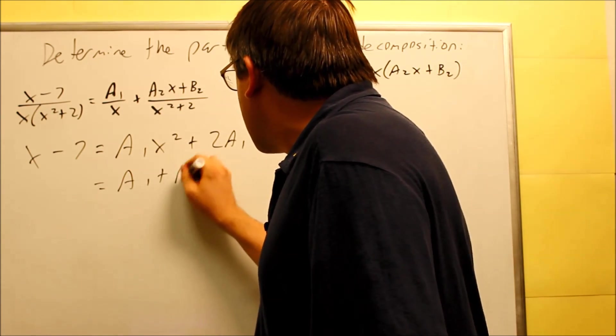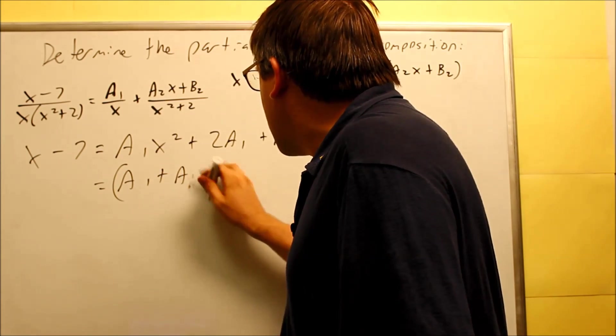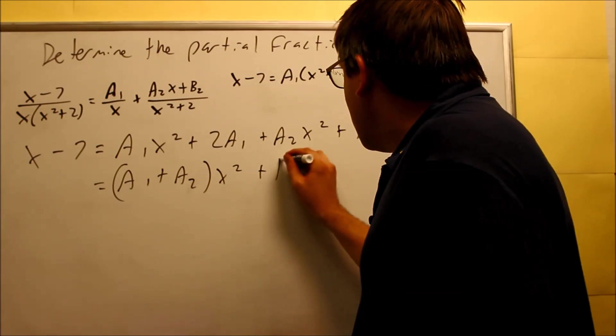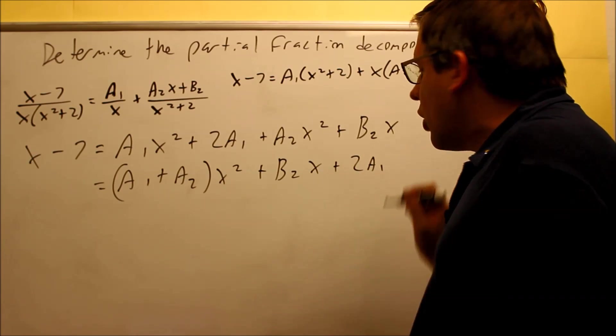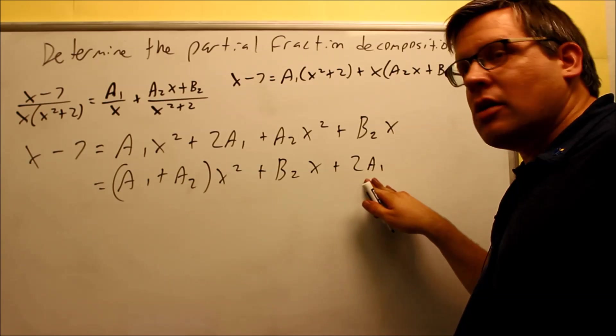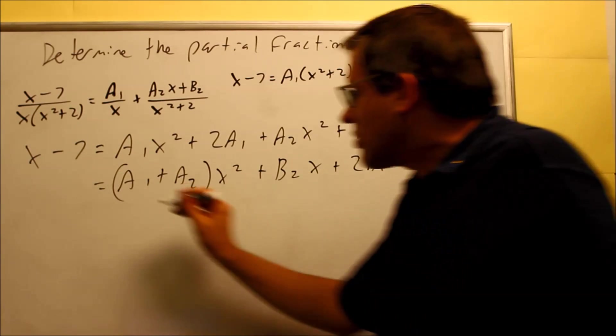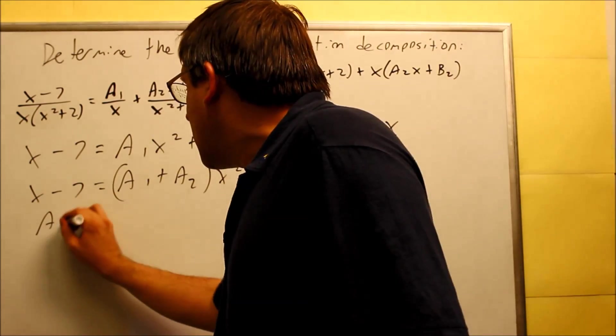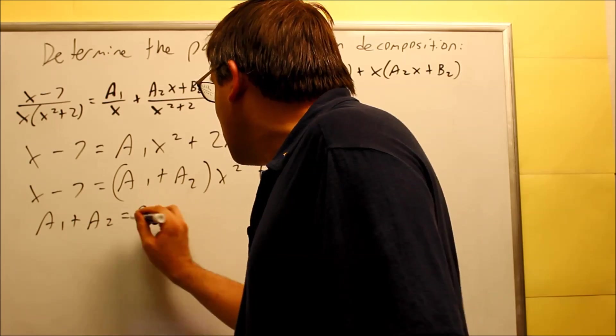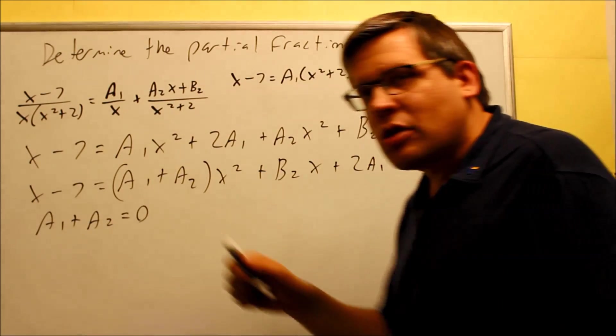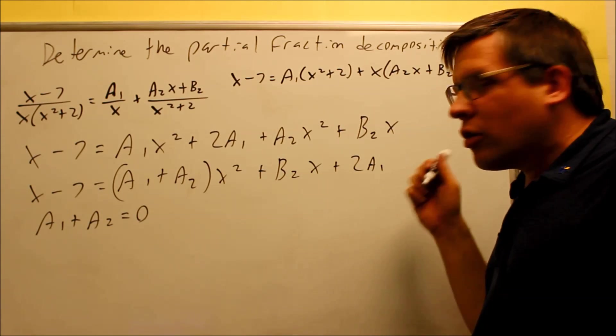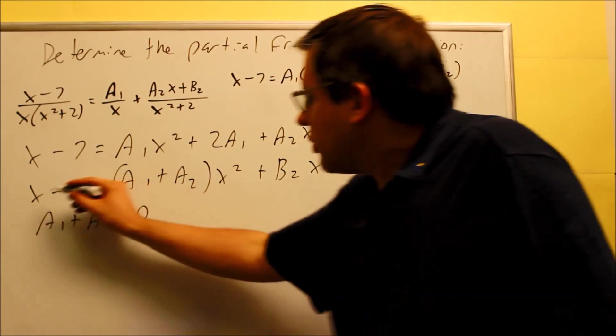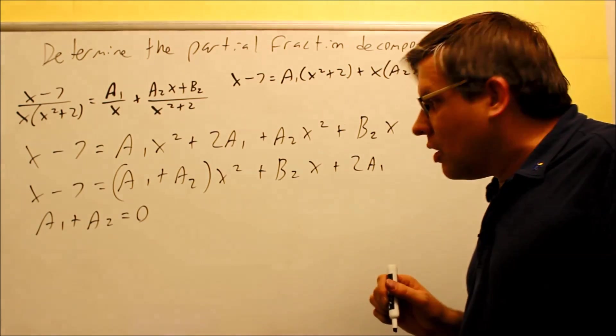And then I have a b2x and I have a 2a1 in the end. So here is my x squared, my x term, and my constant term. On this side over here, we notice that there is no x squared term. So, one equation I can get is a1 plus a2 is going to equal 0. There is no coefficient to match it up with. So that is why this method actually works pretty well for doing the equating coefficients because we have a 0 here and that is going to be it.